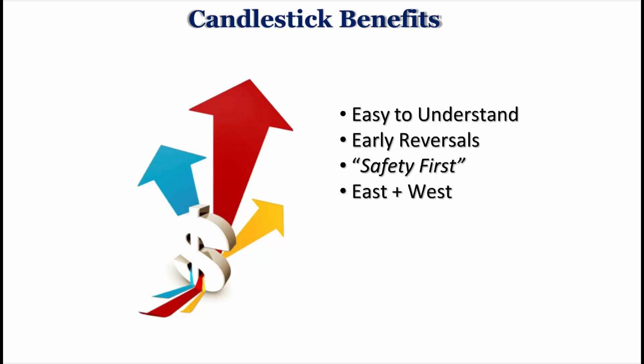The thrust of this point is you're not giving up anything you currently use with your western charting techniques. What we do here with Ninja is create a custom template with our favorite western indicators. Then, if we see a candlestick signal called up or scanned for by a candle scanner, we add that candlestick signal onto our western template to see if it confirms one of our western signals. So you set up a template with your favorite western signals, and when I show you how to use the candle scanner, you throw it onto that template to see if a candlestick signal confirms a western signal.